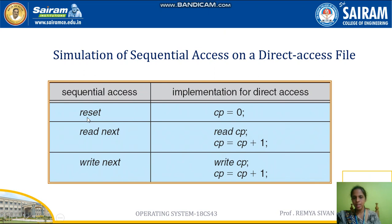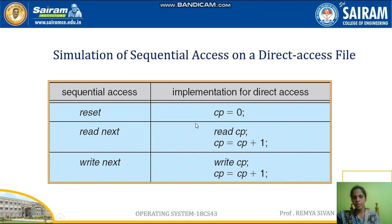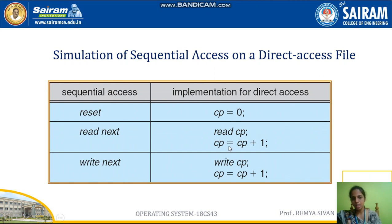To implement 'read next' using direct access: read CP (CP is initialized to 0, so you read the 0th block first), then increment CP to CP plus 1. Now CP is 1, so reading CP reads the first block. Increment again to CP equals 2, and you read the second block — and so on. For 'write next,' similarly, with CP equal to 0 you write to the first location, then increment CP to write to the second location, and so forth.